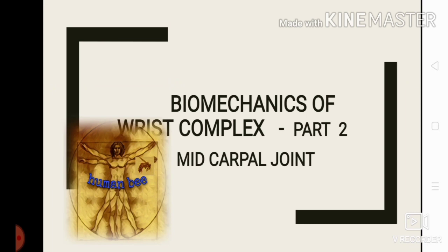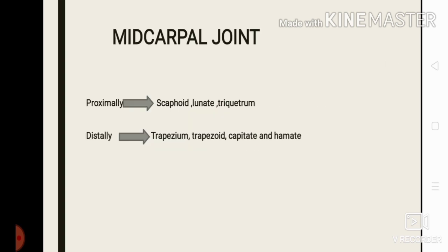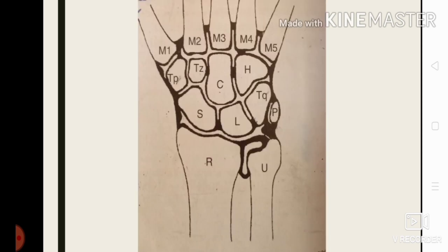Hello friends, welcome to Human Bee. We started wrist biomechanics classes. We know the wrist is composed of two compound joints: one is the radiocarpal joint and the second is the midcarpal joint. In the previous video we discussed the radiocarpal joint, and today we are going to discuss the midcarpal joint. The midcarpal joint is the articulation between scaphoid, lunate, and triquetrum proximally, and distally by trapezium, trapezoid, capitate, and hamate. These are the articulating surfaces of the midcarpal joint.